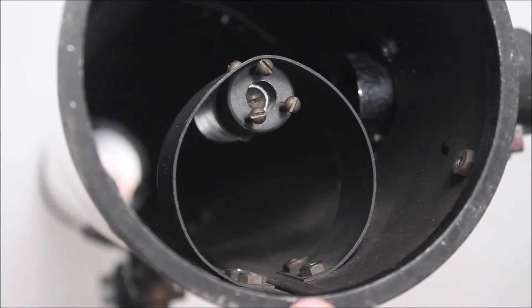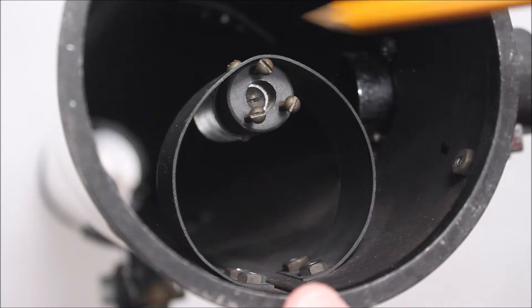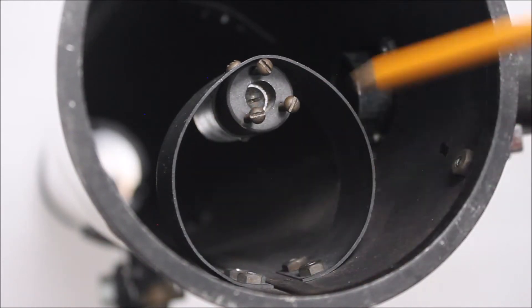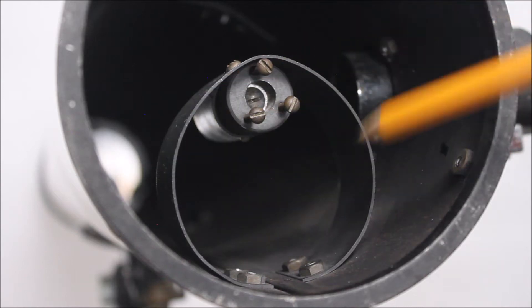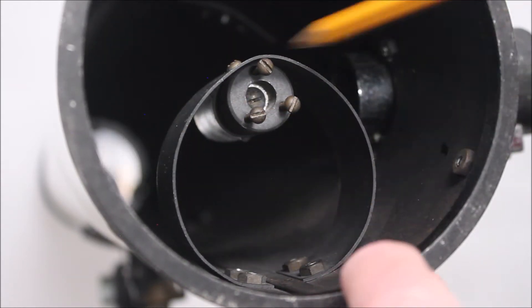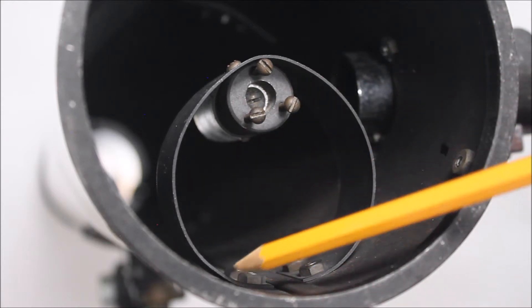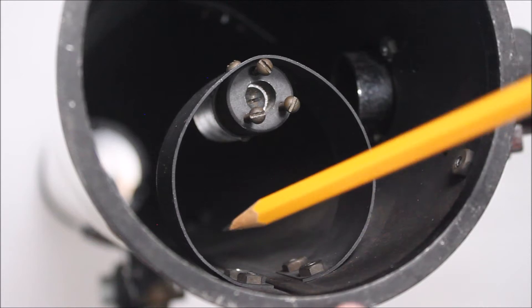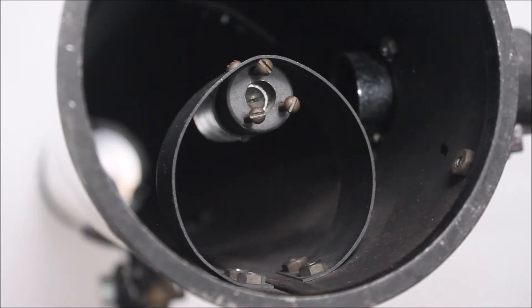One of the most interesting things about this scope is this curved secondary holder and it's not a circle, it's more of an elliptical kind of a shape or maybe an egg shape. It's kind of a weird shape and the idea here was to eliminate diffraction spikes, although why you would want to do that on a telescope of this size, it's not doing any photographic work, I have no idea.